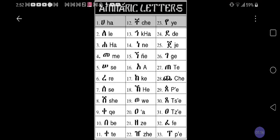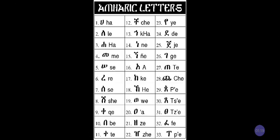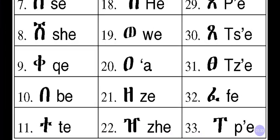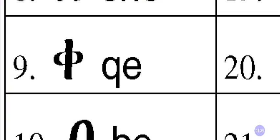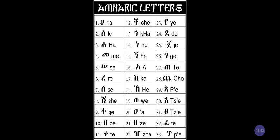Let's go to the Fidel here. This is the basic Fidel right here. The first order column is the Ha-Le-Ha-Messer. That's a click right there — the K. You see the K right there. The ninth letter — the ninth of the 33. So this is about getting our Ethiopian click.